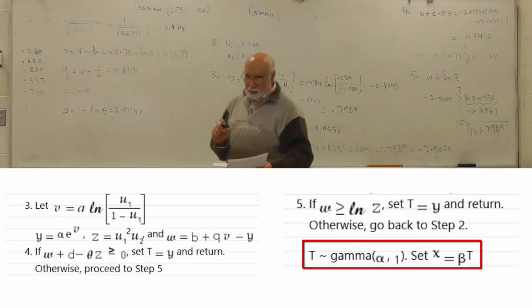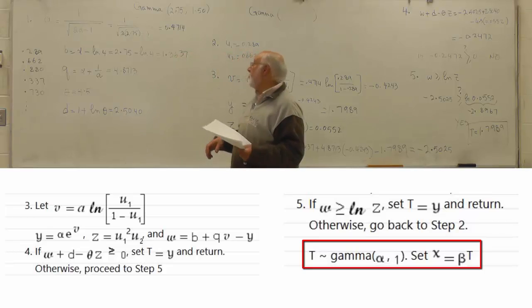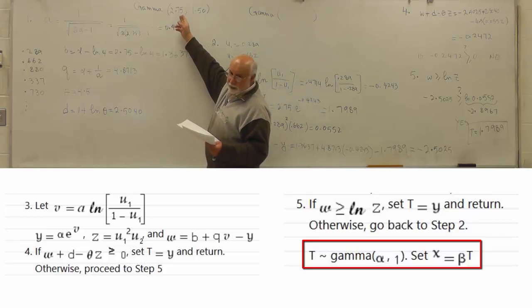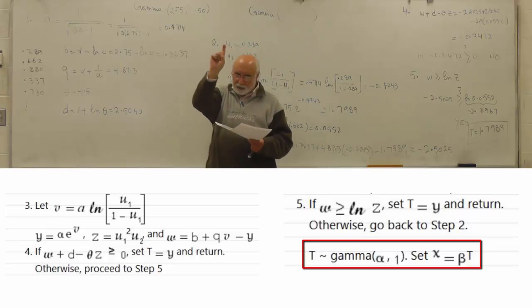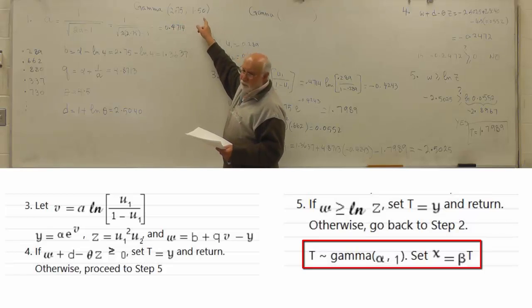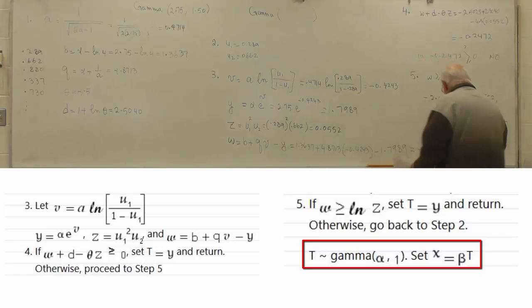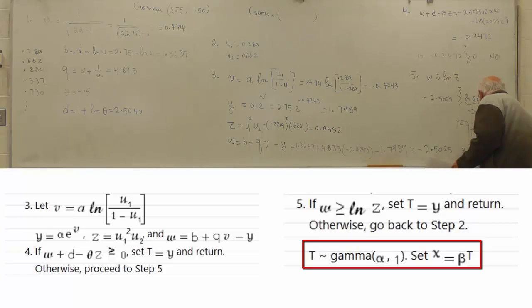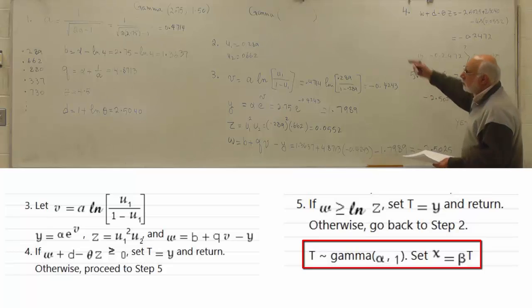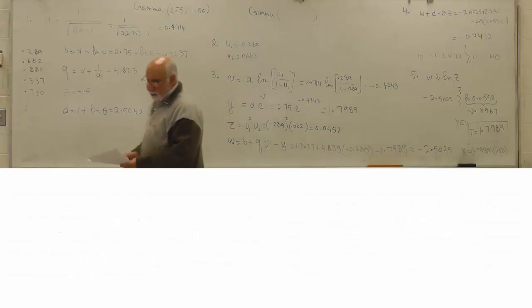We have now generated a random number from gamma 2.75 and 1. To get it to 2.75 and 1.5, you just need to multiply it by the value of beta. So your X is going to be 1.7989 times 1.5. That X value is a number from this gamma distribution.